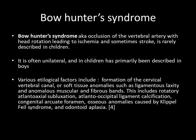Coming to another cause of ischemic stroke: Bowhunter's syndrome. Bowhunter's syndrome, also known as occlusion of the vertebral artery with head rotation leading to ischemia and sometimes stroke, is rarely described in children. It is often unilateral and in children has primarily been described in boys. Etiological factors include malformation of the cervical vertebral canal or soft tissue anomalies such as ligamentous laxity and anomalous muscular and fibrous bands. This includes rotatory atlanto-axial subluxation, atlanto-occipital ligament calcification, congenital arcuate foramen, osseous anomalies caused by Klippel-Feil syndrome, and odontoid aplasia.